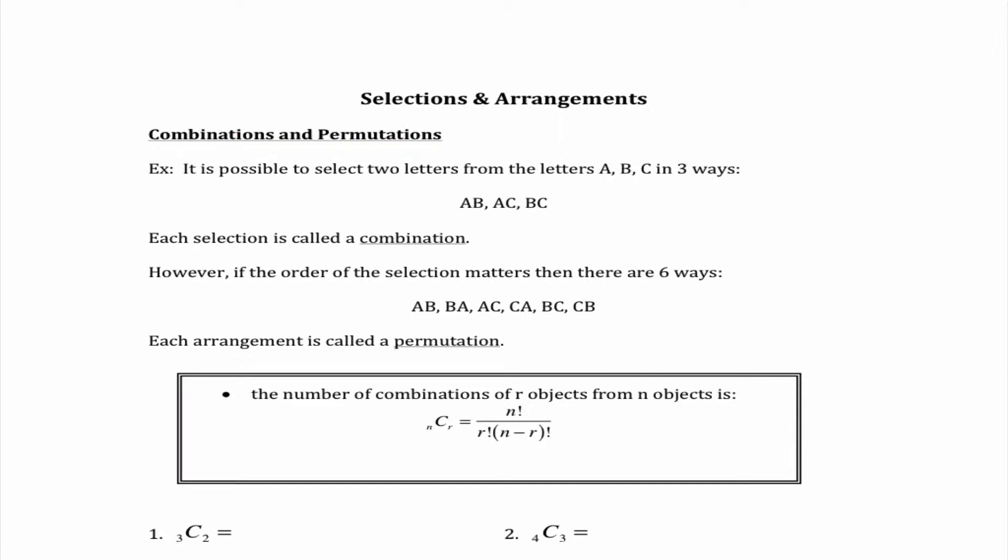For example it is possible to select two letters from the letters A, B, C in three ways: AB, AC, and BC. We call each selection a combination.